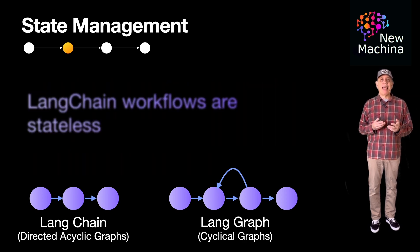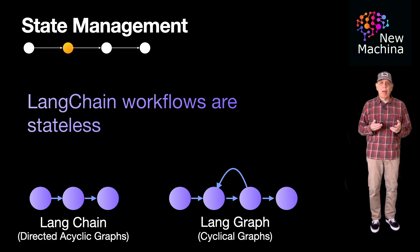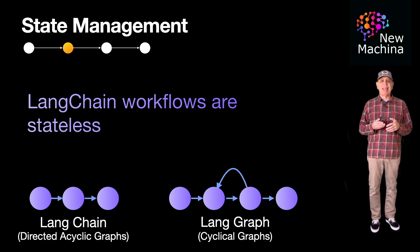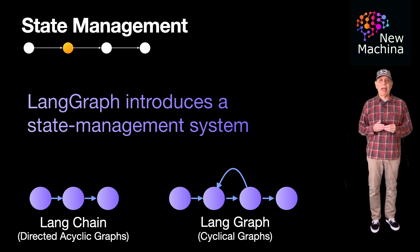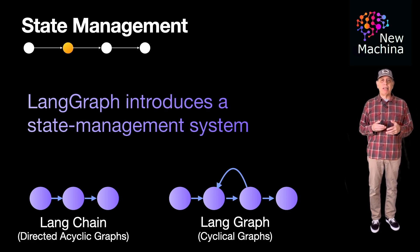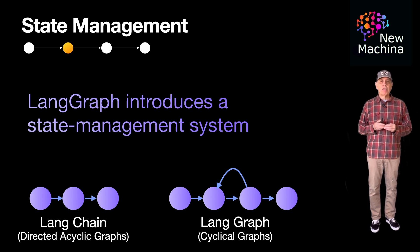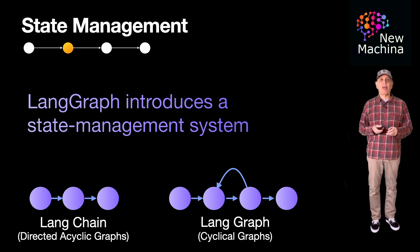LangChain follows a stateless approach, where each step in the workflow is independent and does not maintain state across interactions. Alternatively, LangGraph introduces robust state management capabilities, allowing applications to maintain and update state throughout the workflow. This feature is essential for building stateful, multi-actor applications that can adapt and respond to user interactions dynamically.